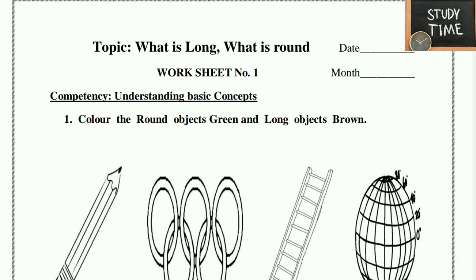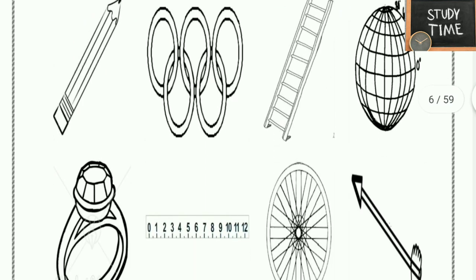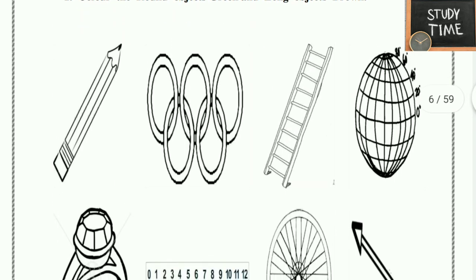Hello everyone, welcome to study time. In this video you are going to see class 2 maths chapter 1: what is long, what is round worksheet. Color the round objects green and long objects brown. Here few objects were given: pencil, ladder, rings and the globe, ring, scale, wheel and arrows. You have to color round objects green and long objects brown.